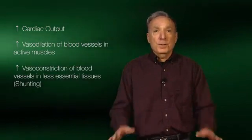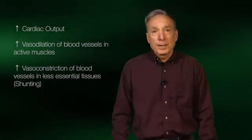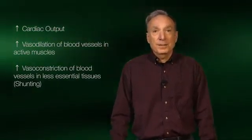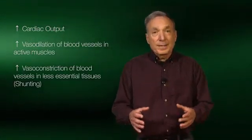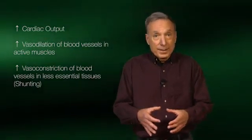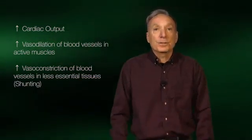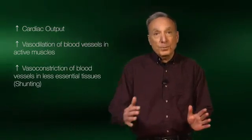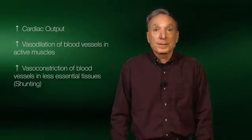Finally, the third method for increasing muscle blood flow is known as shunting. Basically, blood vessels in other tissues, such as the kidneys, liver, and stomach, undergo vasoconstriction. In this case, the smooth muscle surrounding these blood vessels contracts, thereby narrowing the blood vessels and resulting in a significant reduction in flow. The purpose of this response is to redirect or shunt blood flow away from these organs to the active muscles where it is needed.